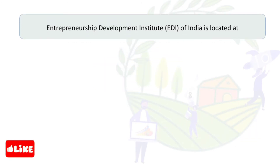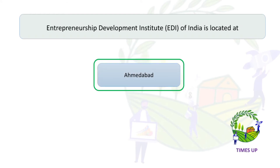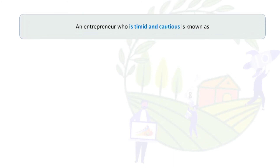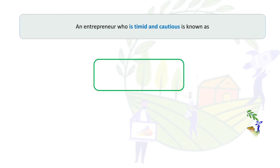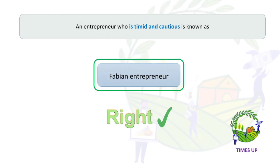Entrepreneurship Development Institute (EDI) of India is located at Ahmedabad. An entrepreneur who is timid and cautious is known as a Fabian entrepreneur.